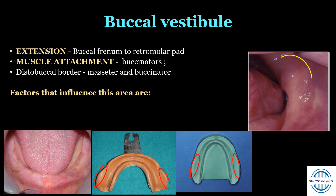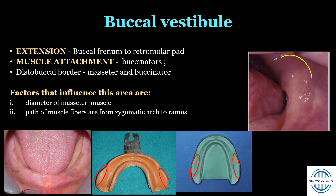The various factors that influence this area are: first, the diameter of the masseter muscle — smaller diameter means less influence. Second, the path of the muscle fibers from the zygomatic arch to the ramus — more medial the path, more influence. Third, the angle of the ramus — if it is perpendicular, it will have more influence on this area.